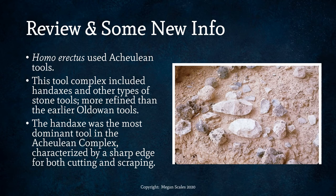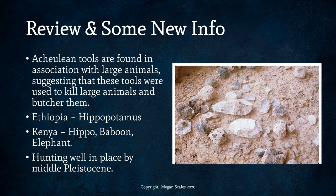Homo erectus used Acheulean stone tools. This stone tool complex included hand axes and other types of stone tools, more refined than the earlier Oldowan tools. The hand axe was the most dominant tool, characterized by a sharp edge for both cutting and scraping. Acheulean tools are found in association with large animals — for example, hippopotamus in Ethiopia, and hippo, baboon, and elephant in Kenya — suggesting these tools were used to kill and butcher large animals. Hunting large game was well in place by the middle Pleistocene, whereas with Homo habilis we were talking about small animals and scavenging. So we really see hunting emerge with Homo erectus.